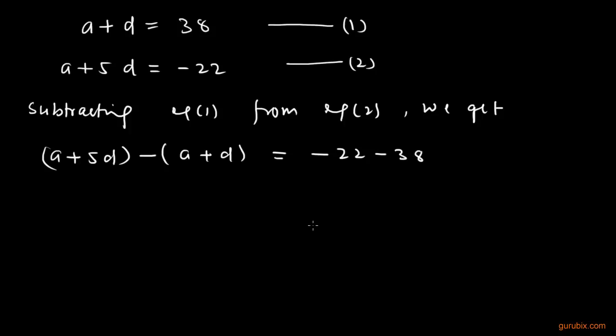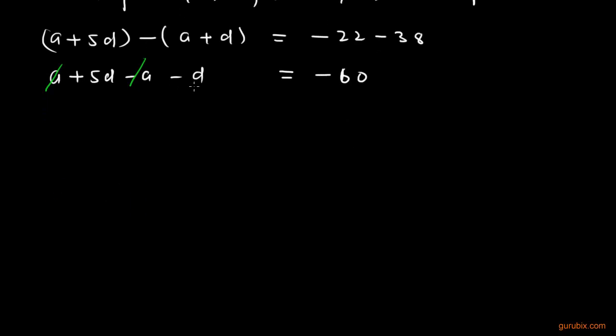This equals minus 60. If we expand it, this is a plus 5d minus a minus d. We can cancel out this negative a with this positive a, and when we subtract this d from this 5d, we get 4d equals to minus 60. This means d is equals to minus 15. This is the common difference.